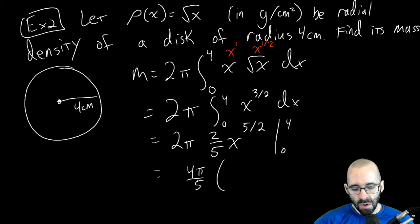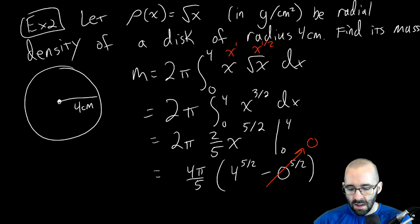Then plug in four: we get four to the five halves minus plug in zero - that's just going to be zero. Four to the five halves - that's the square root of four to the fifth, so it's two to the fifth, that's 32.